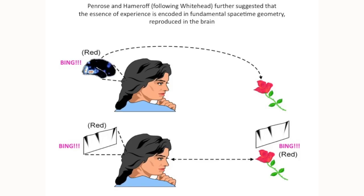Now I'm running through these quickly, obviously, but the basic idea is that the quality of the rose, the redness of the rose, is a pattern in space-time geometry, which is reproduced in her, in her brain by virtue of this mechanism that connects our brain to fundamental space-time geometry.